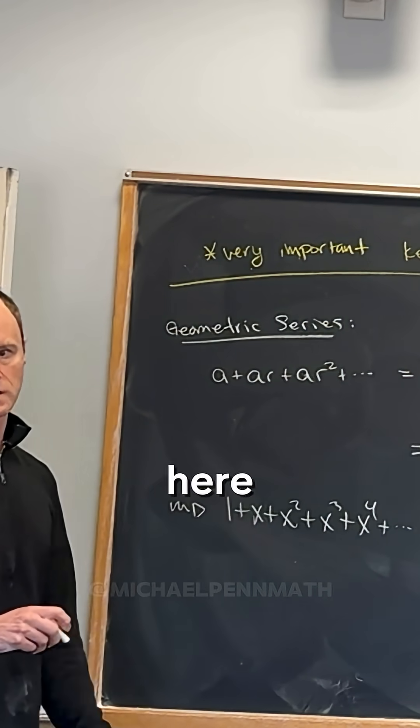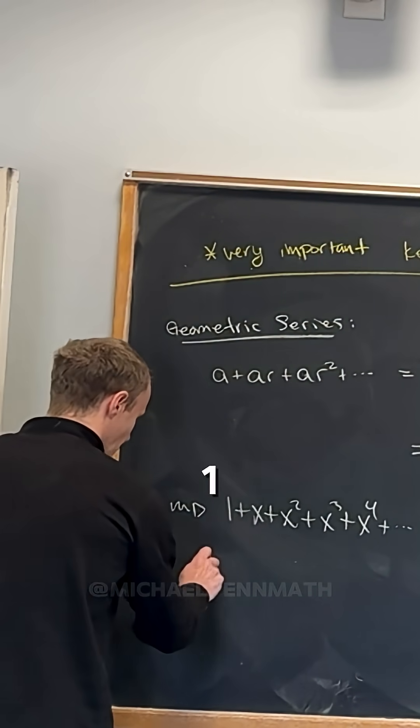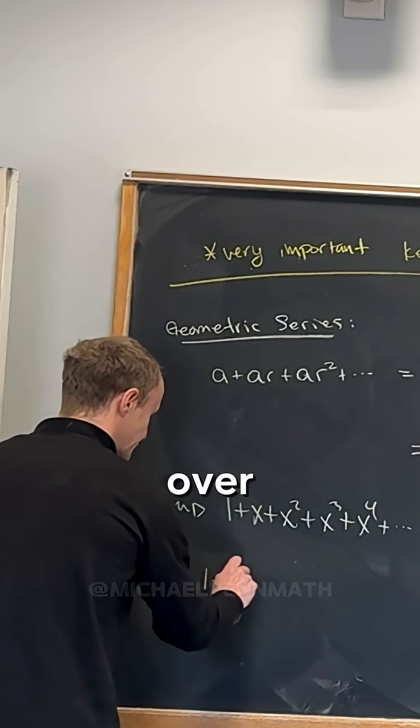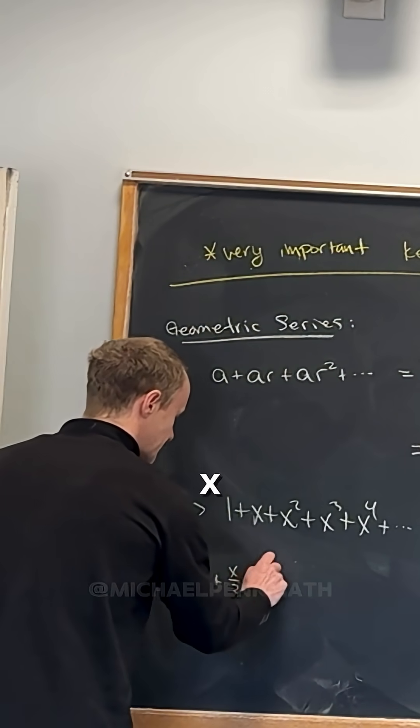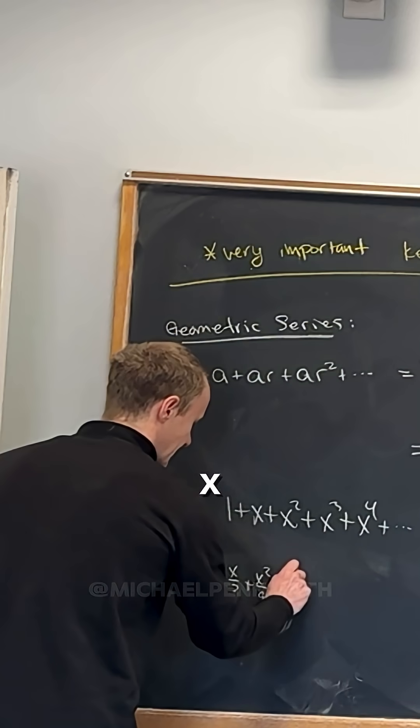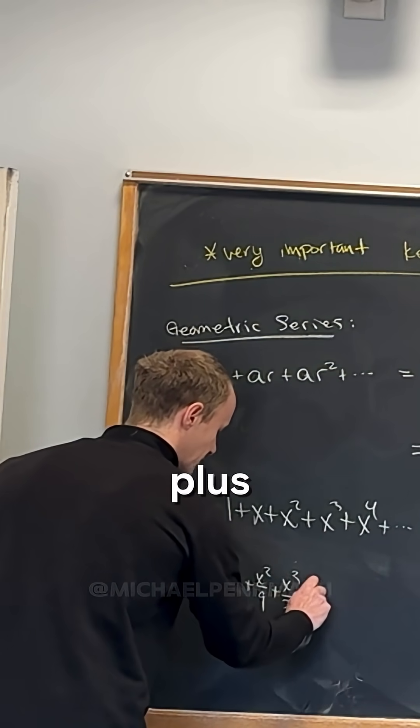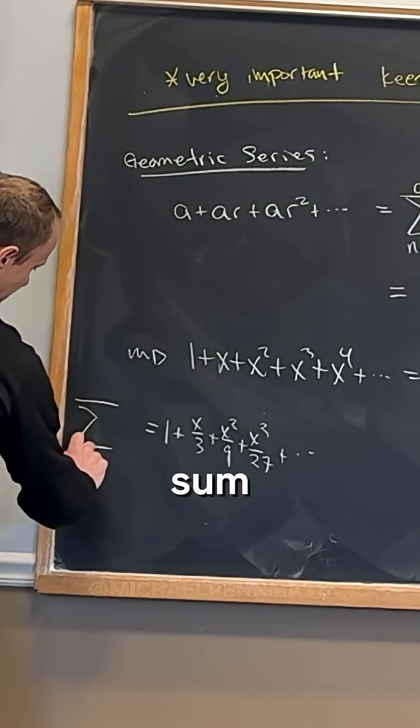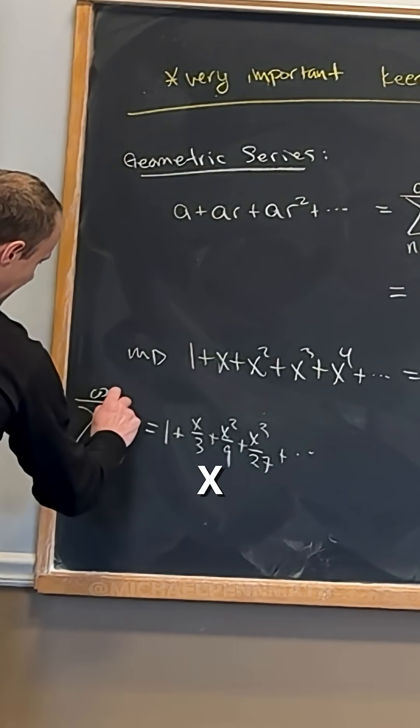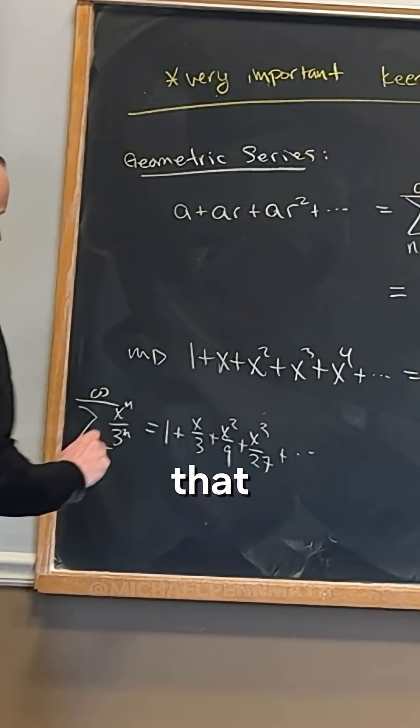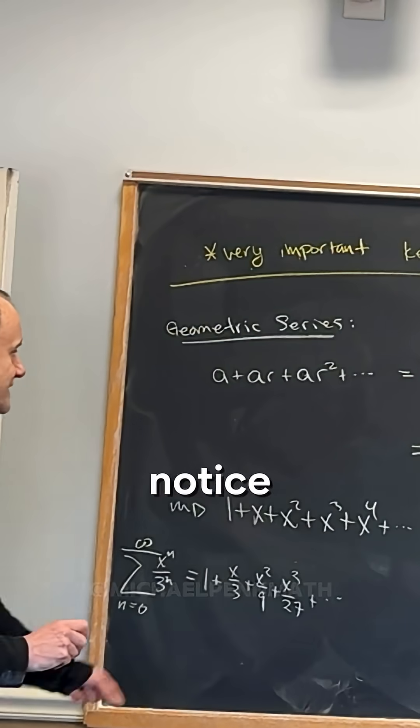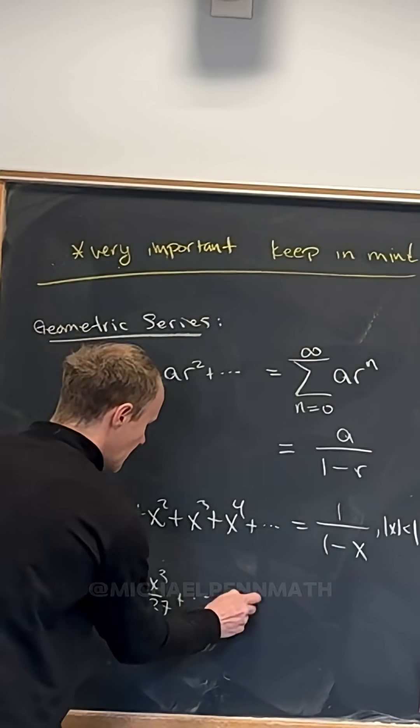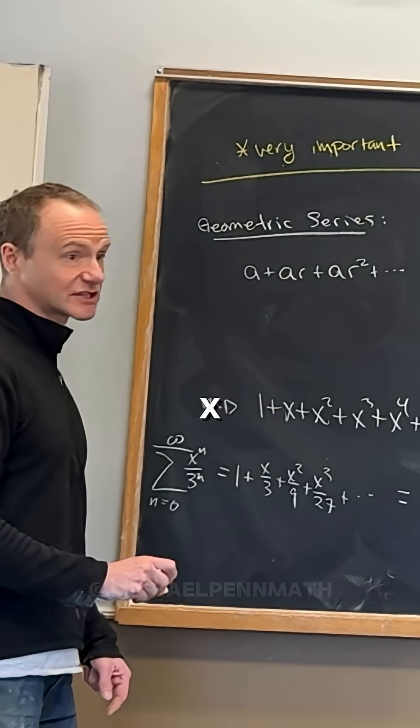So another example would be 1 + x/3 + x²/9 + x³/27 + ... In general, that would be the sum as n goes from zero to infinity of x^n/3^n. That would be an example of that.